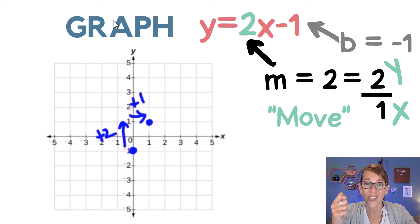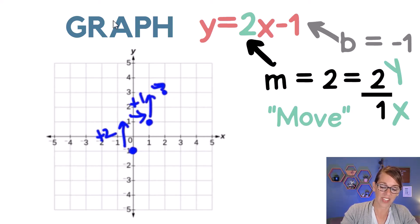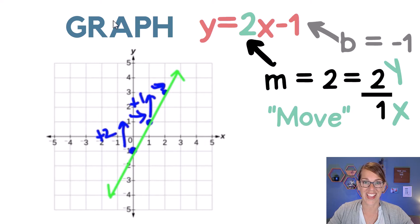Two points is all I need to define that line, but you could certainly do this again, right? You could go positive 2 in the y, positive 1 in the x, and I'm on another point on that line. Let's go ahead and graph that line. I don't need all three of these, but here is my line. Infinitely many points on that, so I'll go ahead and put double arrows on the ends.